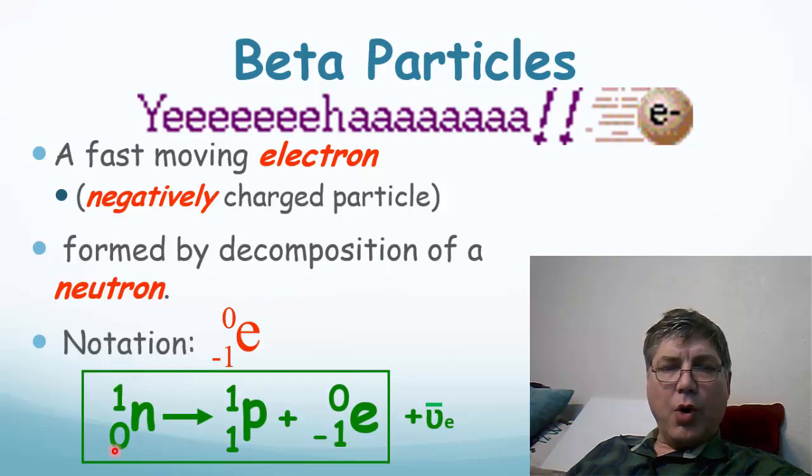A neutron used to be thought, or originally was thought, before Chadwick, to possibly be a proton and an electron combined together so that their charges would cancel out and we would have a neutral particle. And from this nuclear equation, it also looks like that. But it's actually not.